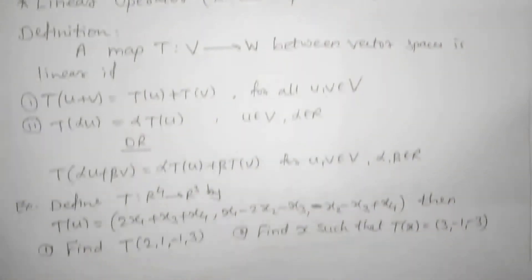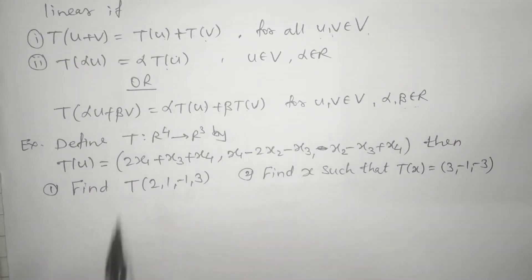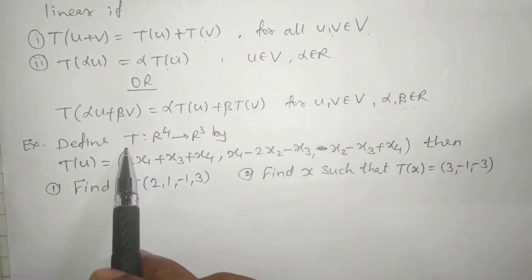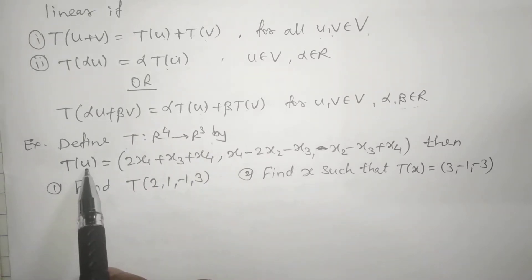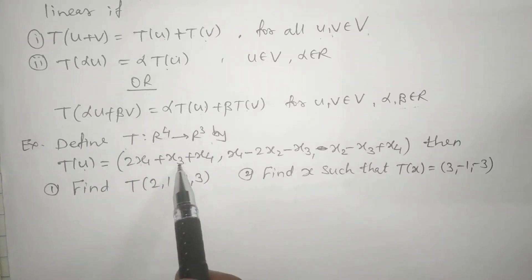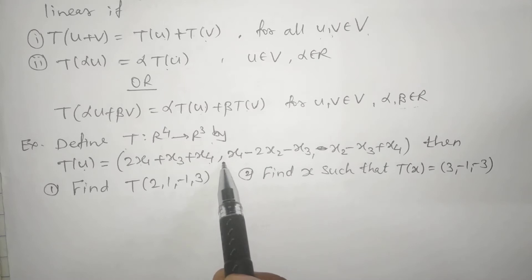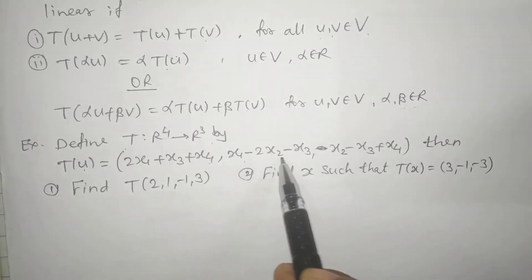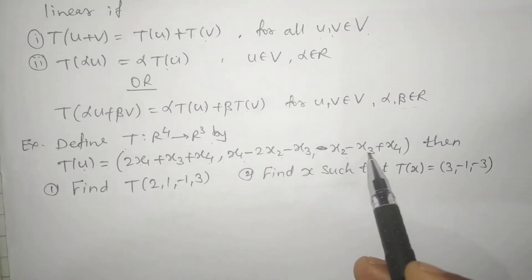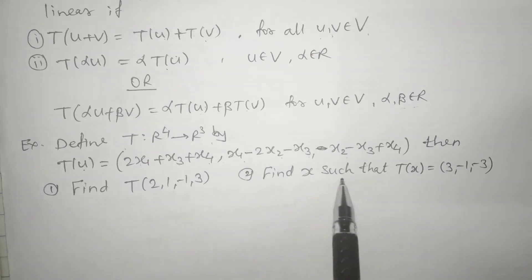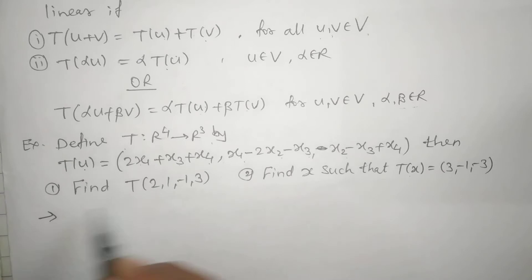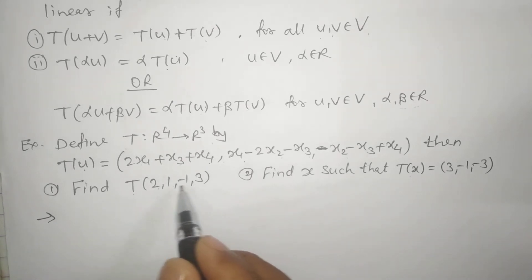Let us see the examples. Define T, a map from R raised to 4 to R cube, by T of U equals 2x1 plus x3 plus x4 comma x1 minus 2x2 minus x3 comma x2 minus x3 plus x4. Then you have to find T of (2, 1, -1, 3) and also find x such that T of x equals (3, -1, 3).